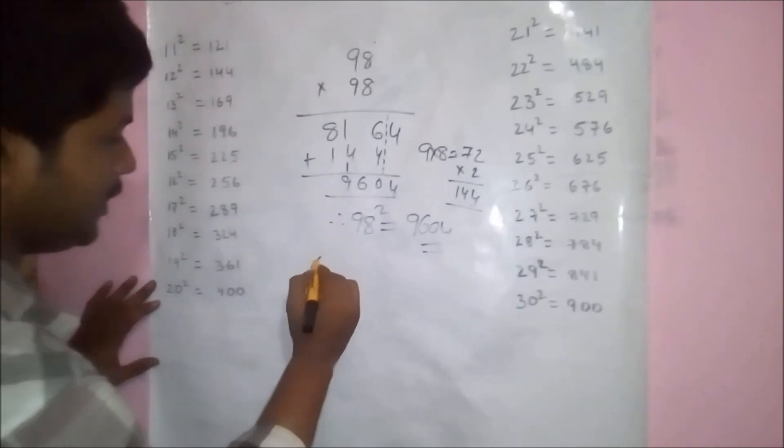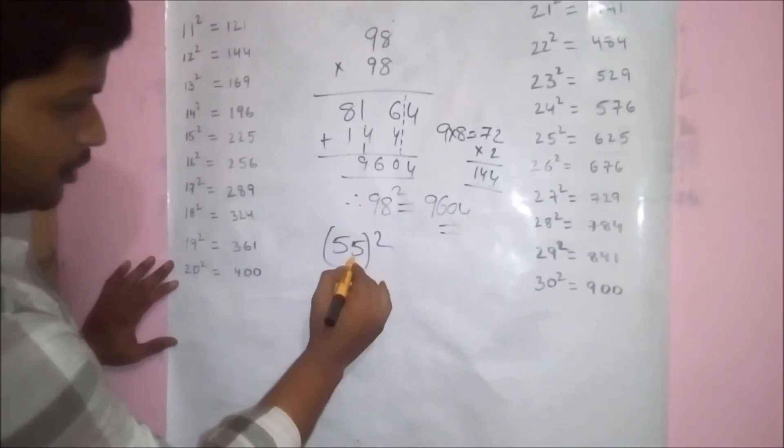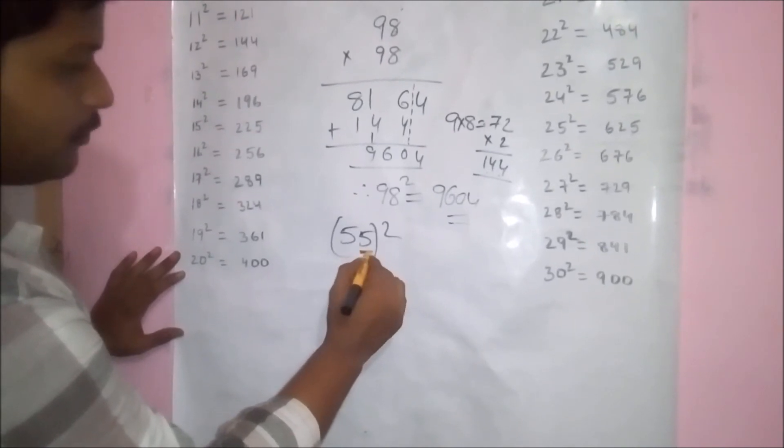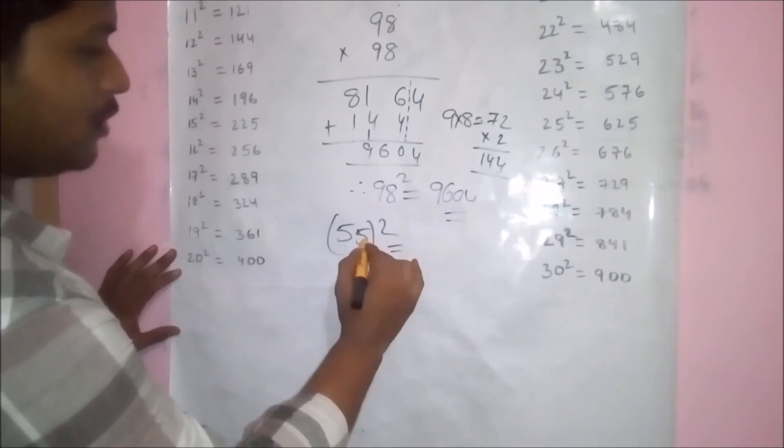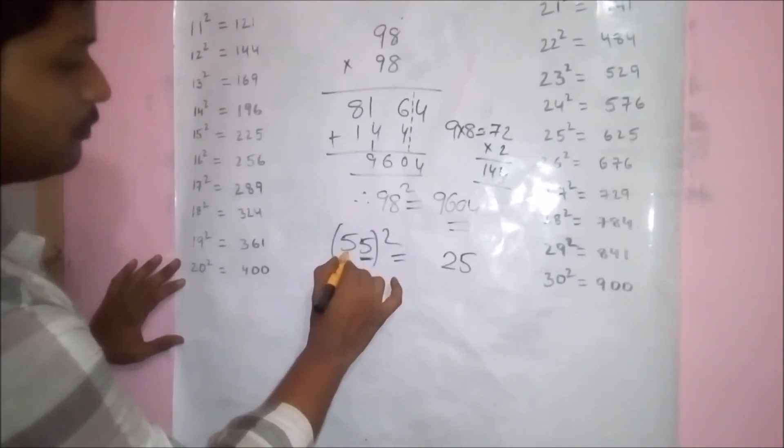Next one is for finding out 55 square. Here you can observe the unit digit is 5. If unit digit is 5, square the value. 5 square becomes 25. And tens digit, consecutive number. That means 5.